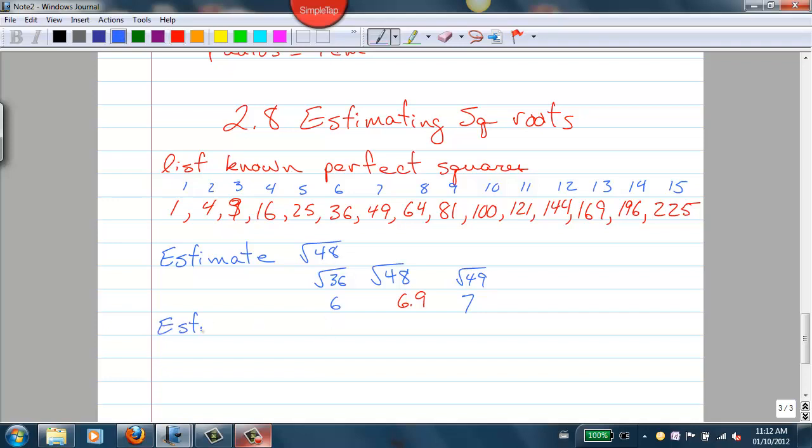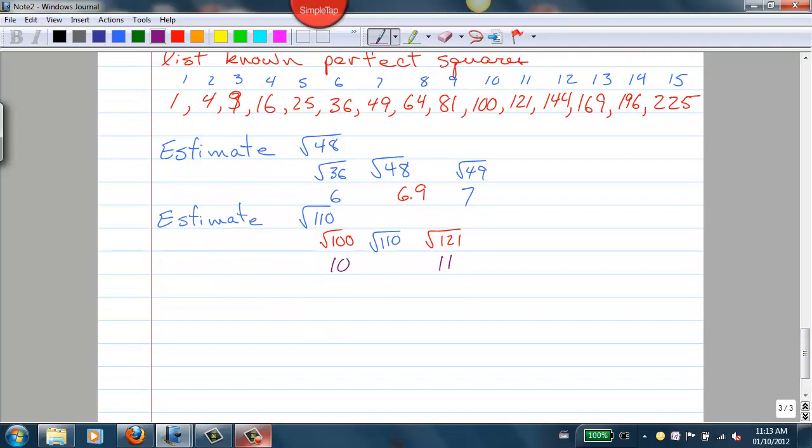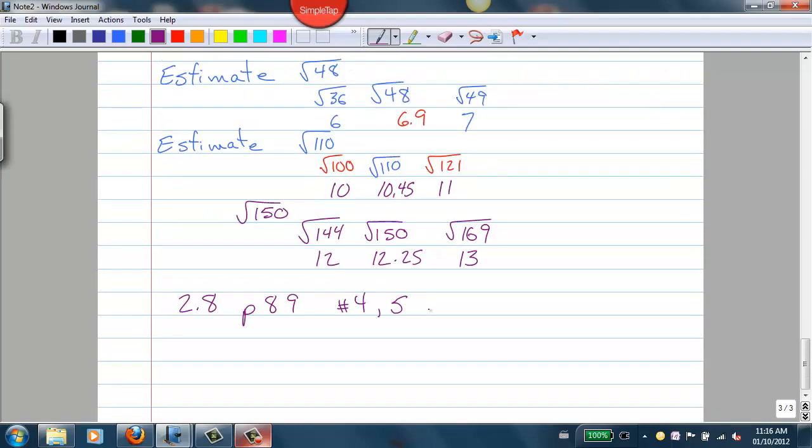Another example, if we're estimating the square root of 110. So 110 is between 100 and 121. The square root of 100 is 10. The square root of 121 is 11. 110 is marginally closer to 100 than it is to 121. So maybe 10.4, 10.45, something like that. Then you compare it to your calculator. So do the estimation first, and then check it with your calculator.